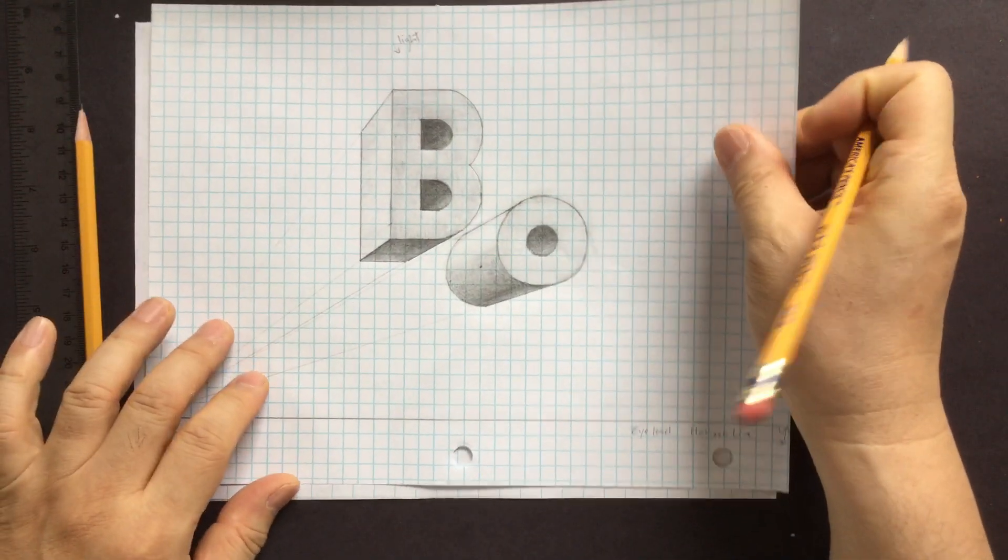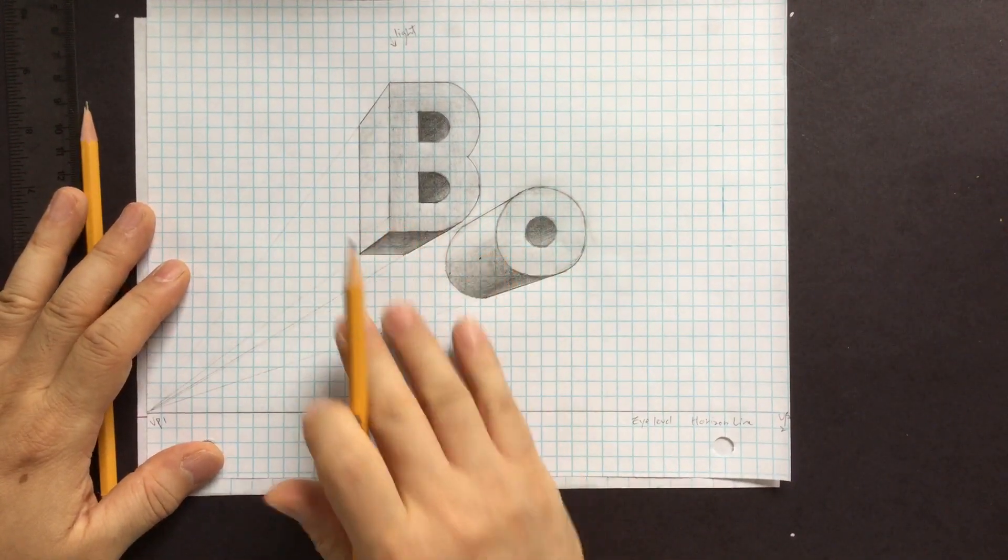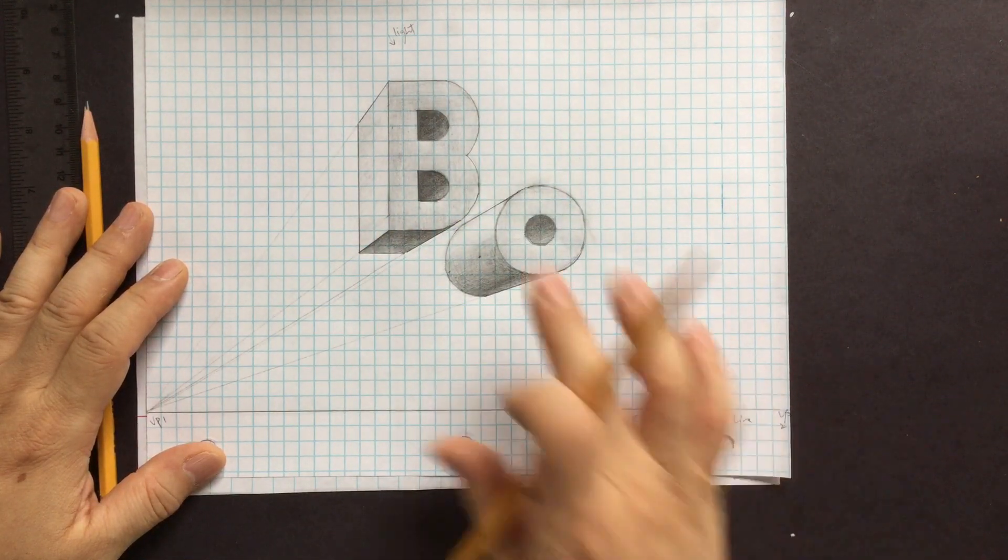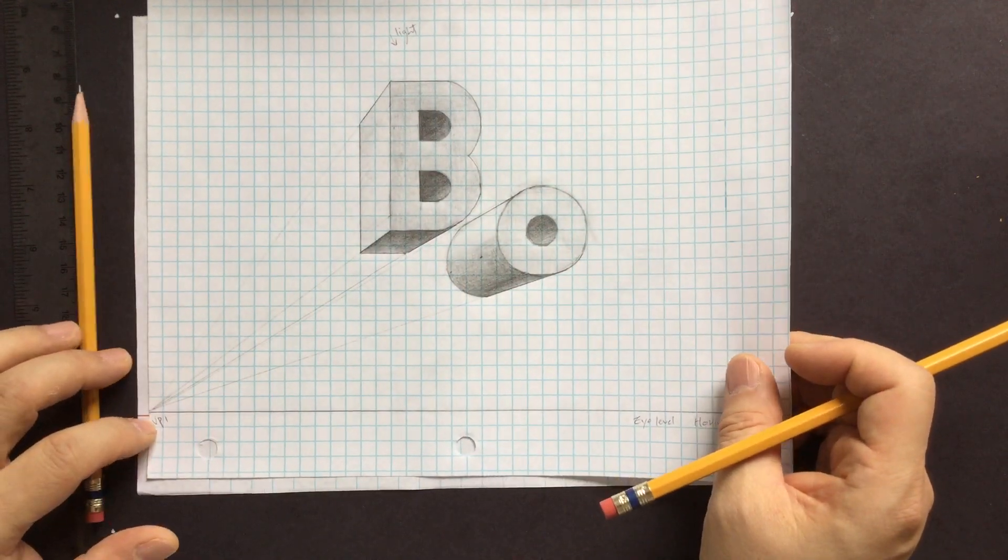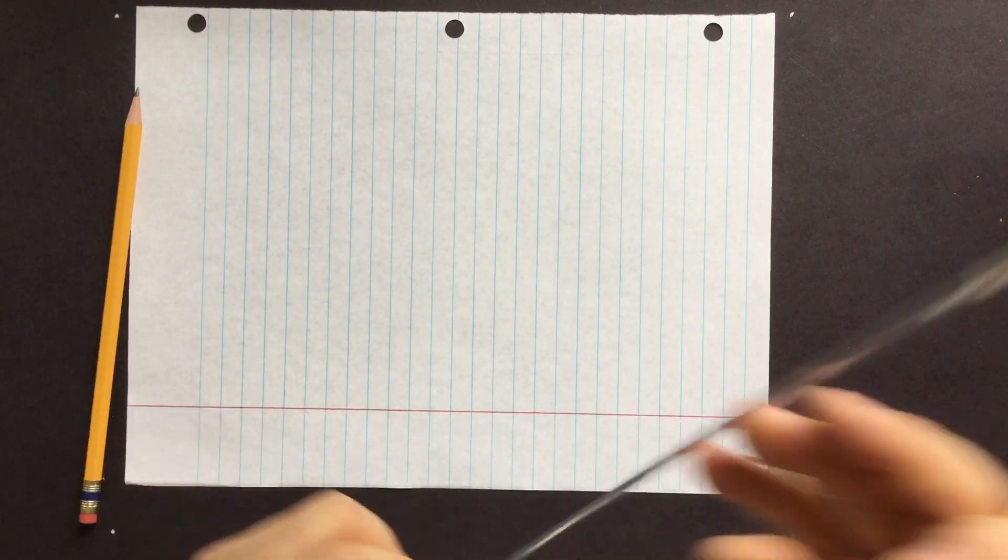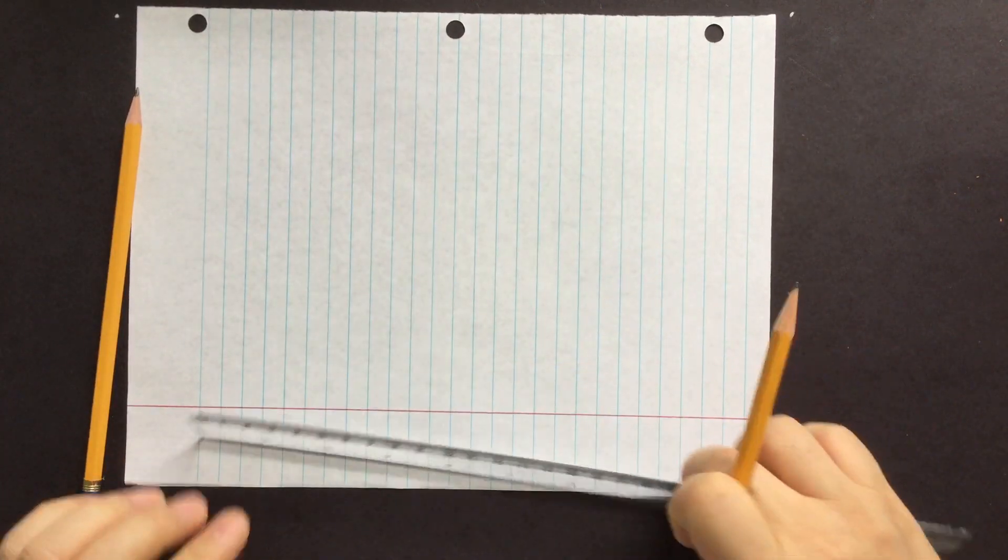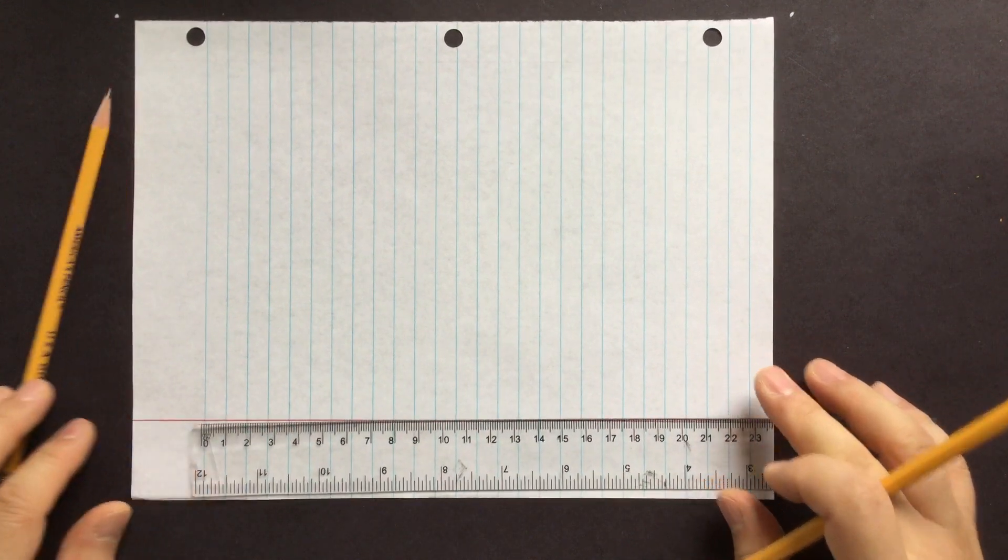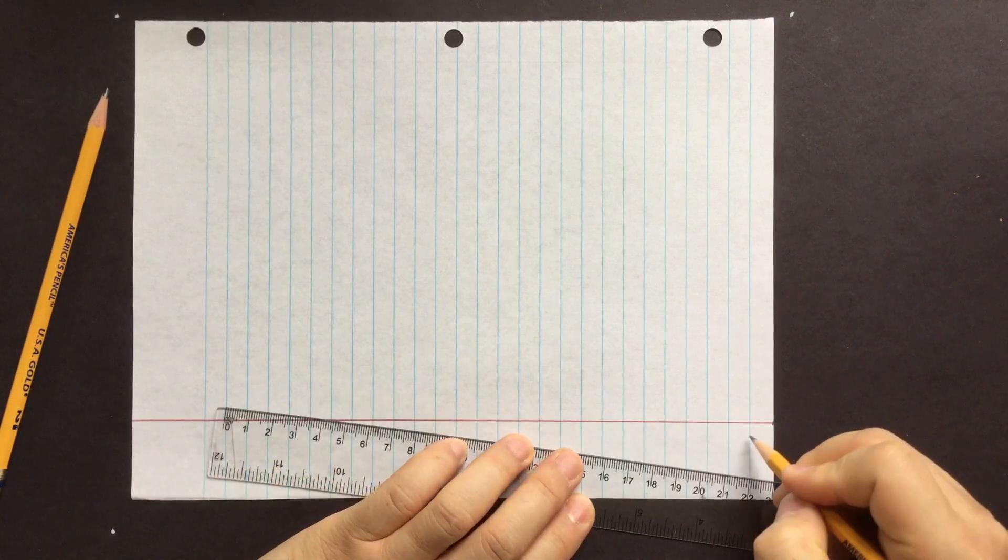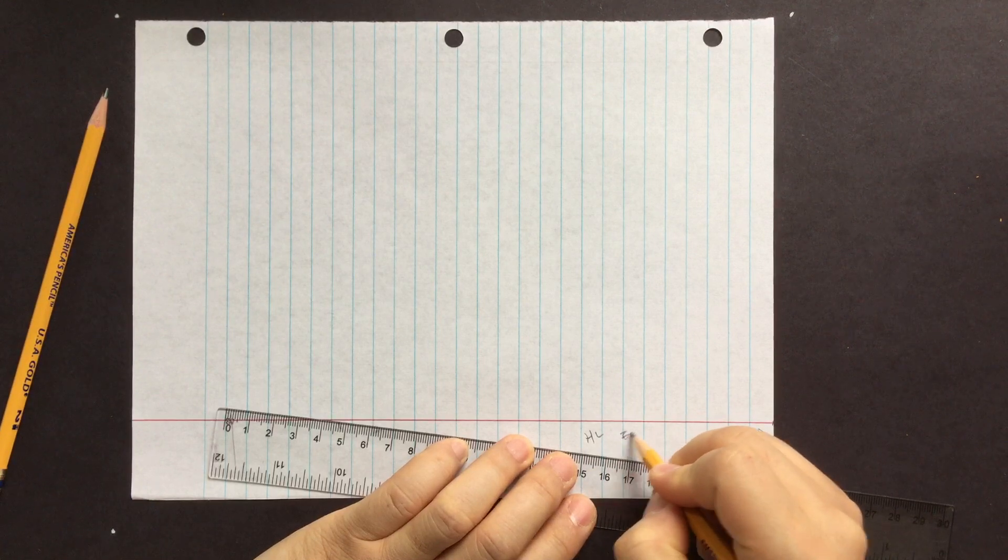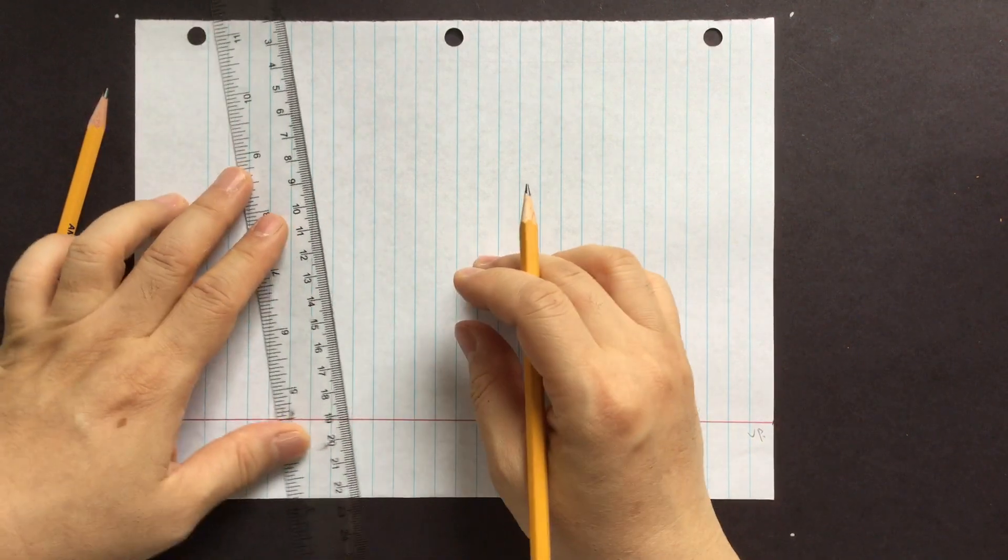But here before I move on, probably might be more interesting creating the vanishing point here than the left, so we're going to switch. So what you want to do is, this is about one inch, one centimeter thickness. Okay, so vanishing point here. And this is again horizon line and eye level.